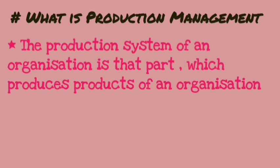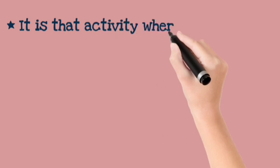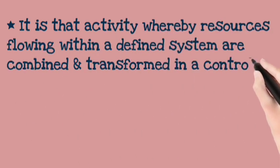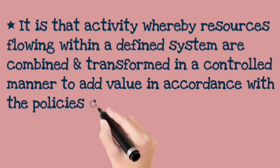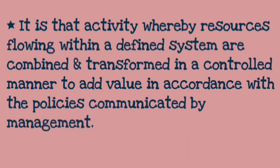In our organization or factory, the production system is an activity where we bring resources and transform them in a particular manner. After we transform them, we create a product that is useful for customers. These products are made with the help of certain policies set by the company's management.